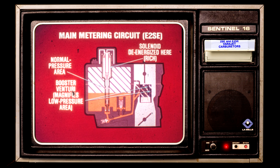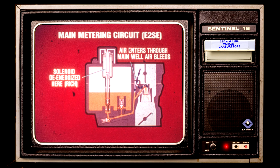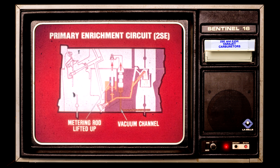At part throttle and cruising speeds, airflow creates a low pressure area in the venturi magnified by the booster venturi, and fuel is forced from the normal pressure area above the fuel in the float bowl into this area. Air enters through the main well air bleeds and mixes with the fuel. If the solenoid is energized, the only difference is that fuel flows through the main jet only.